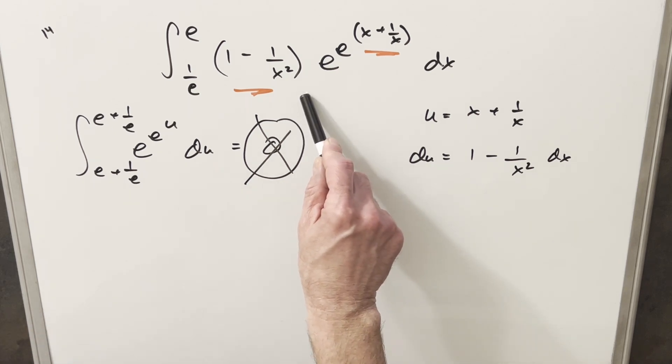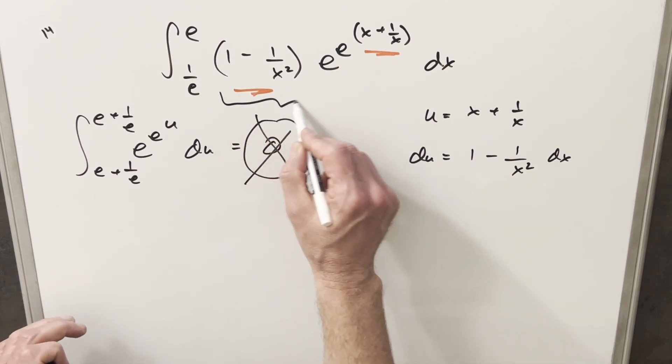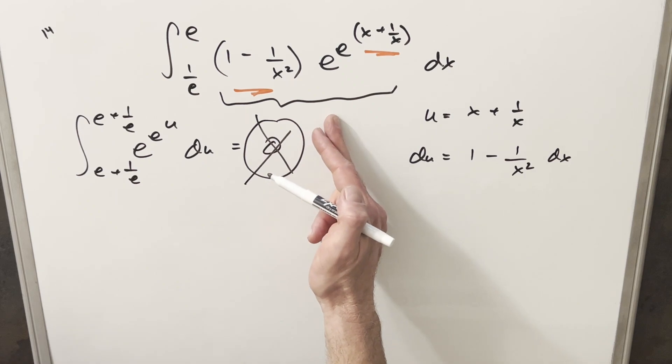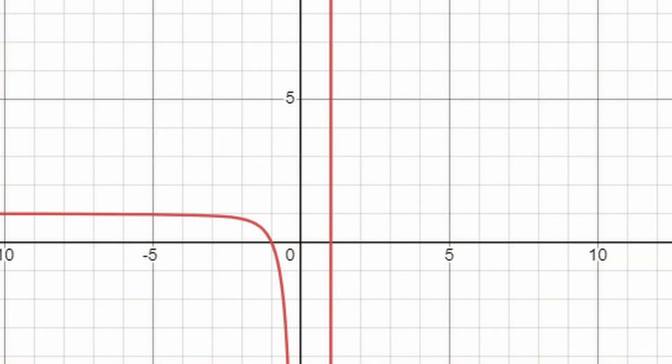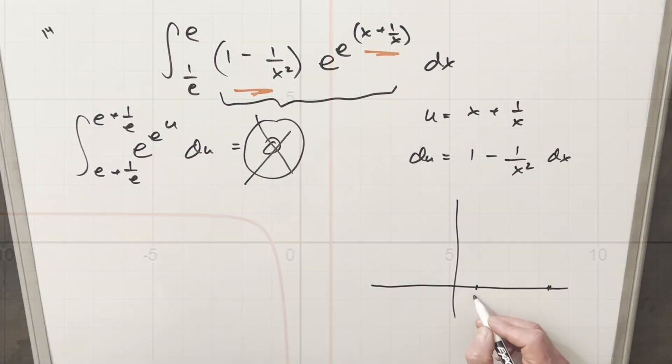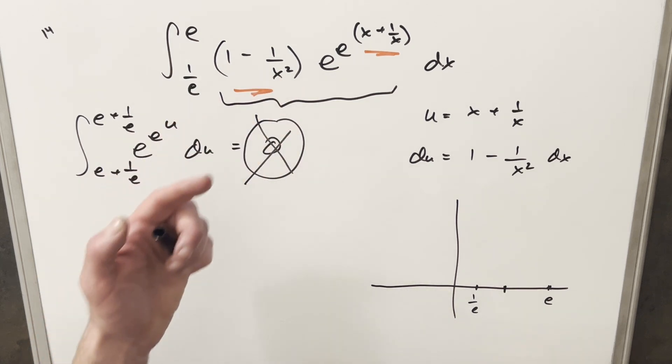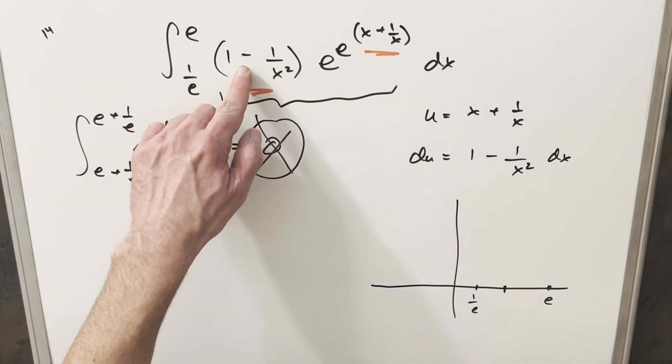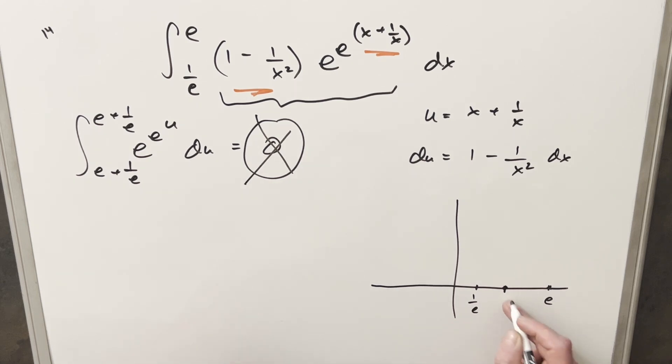But now getting back to the integral that we're working on, the question is, does this thing right here—does all this pass the horizontal line test? Well, in the other video we did take a quick look at the graph of this, and it was pretty strange. We're only concerned with the graph between 1 over e and e. So somewhere in here, let's just say this is 1 over e and this is e. Now the strange thing about the graph of this is at the point one, you'll notice if you plug one in here, it's zero. So we are at zero at one.